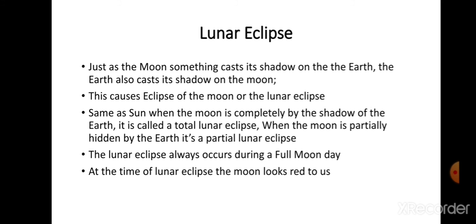Same as with the Sun, when the Moon is completely blocked by the shadow of the Earth, it is called a total lunar eclipse. When the Moon is partially hidden by the Earth, it is a partial lunar eclipse. The lunar eclipse always occurs during a full moon day.